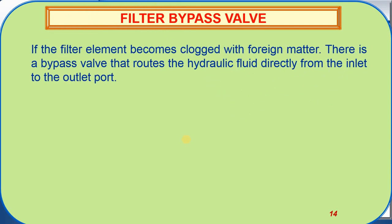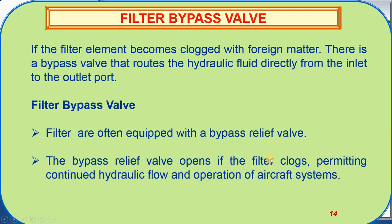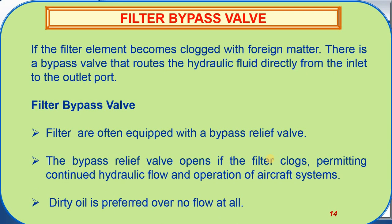Filter bypass valve. If the filter element becomes clogged with foreign matter, there is a bypass valve that routes the hydraulic fluid directly from the inlet to the outlet port. Clogging filters are often equipped with a bypass relief valve. The bypass relief valve opens if the filter is clogged, permitting continuous hydraulic flow and operation of the aircraft system. Always remember: dirty oil is preferred over no flow at all.